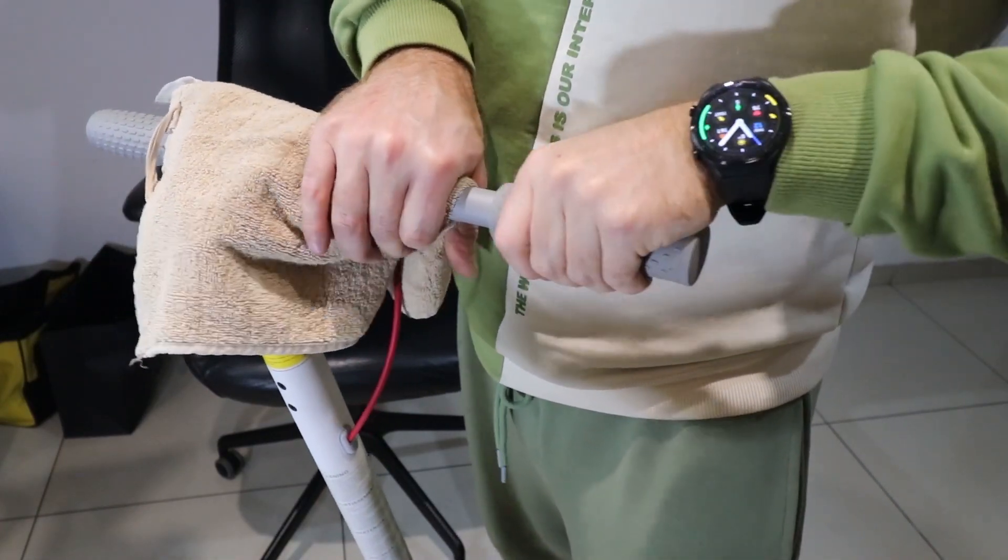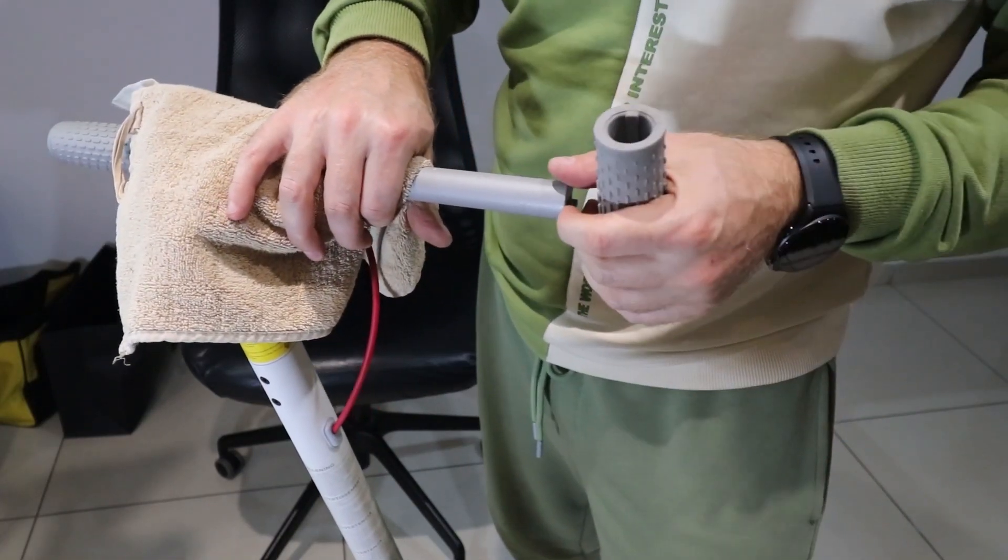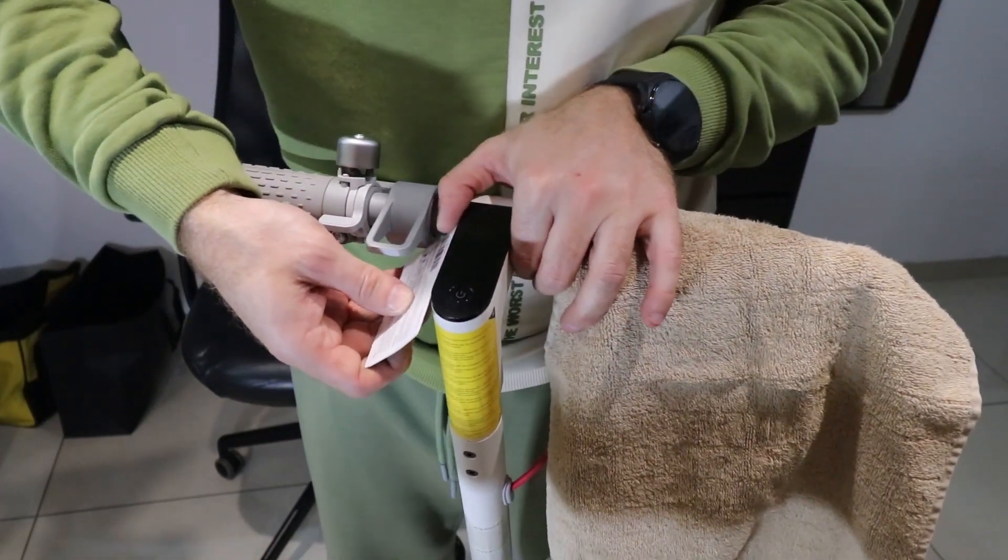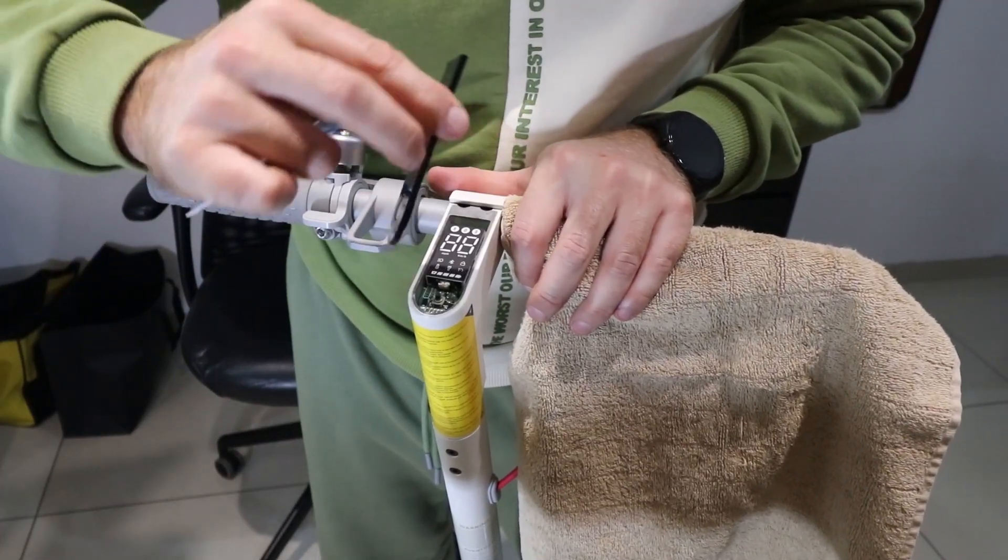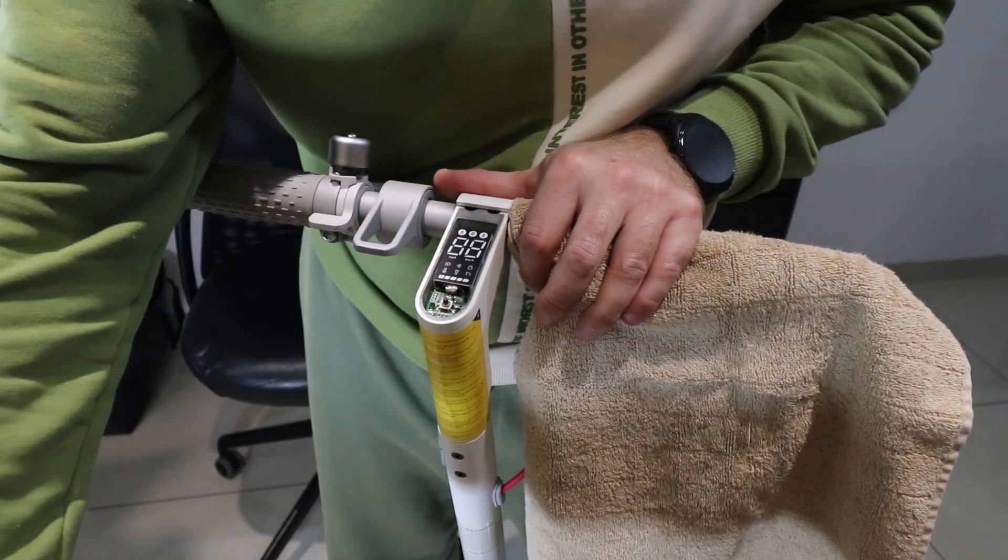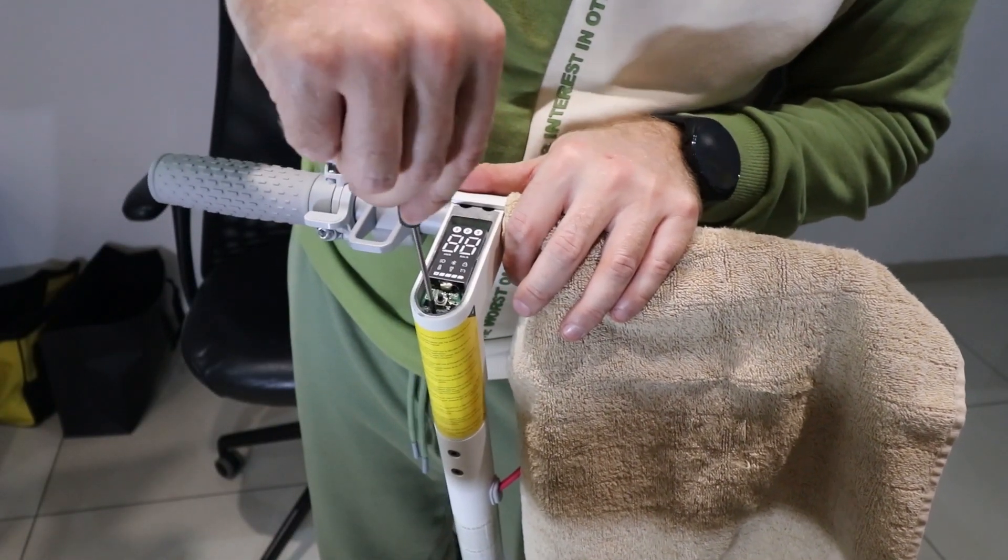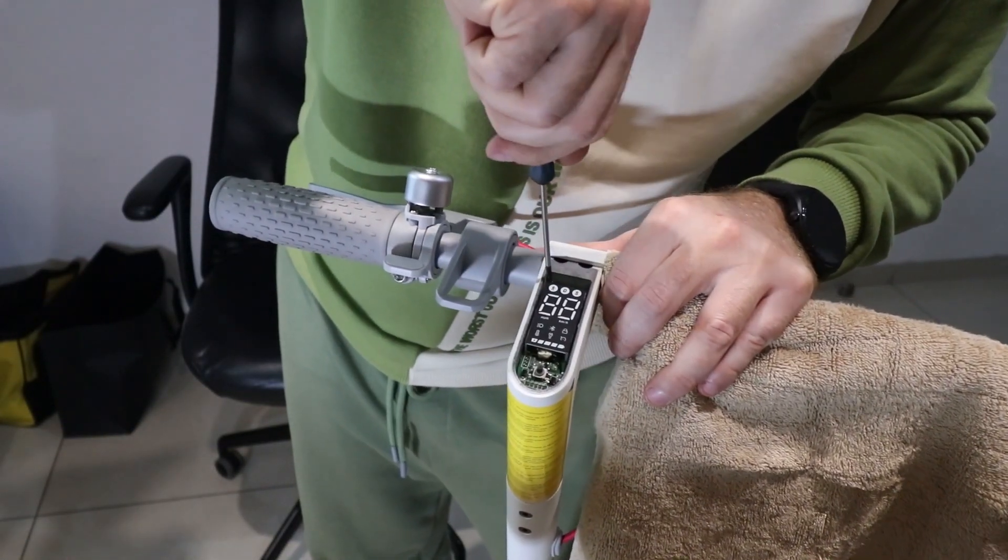In order to change the throttle, you will need to remove the rubber handle first. Try opening the dashboard cover with a plastic card. Pulling it out by force is the only way to open it, because it's glued. The best solution for me is to use a regular plastic card.